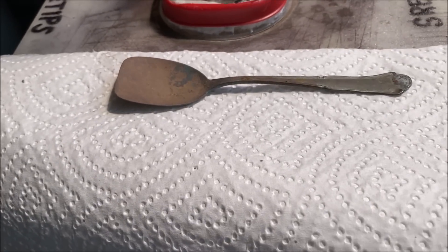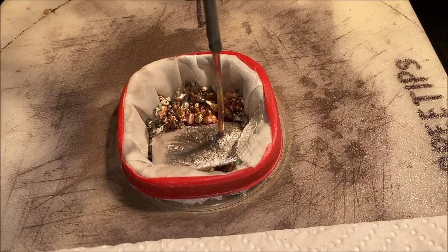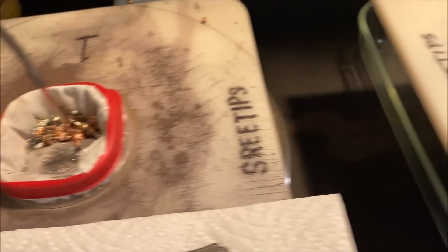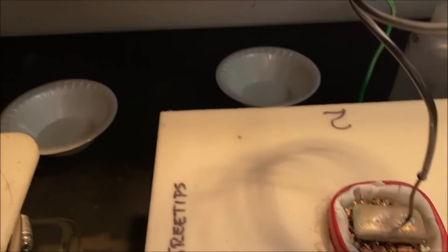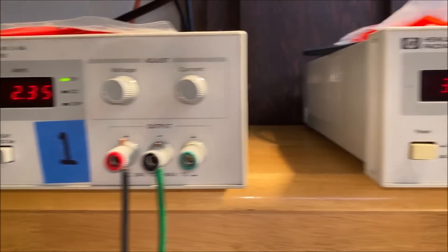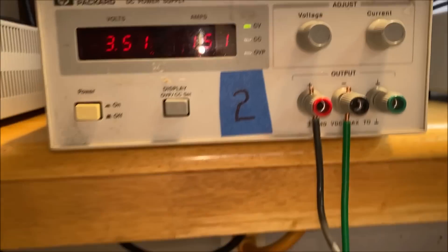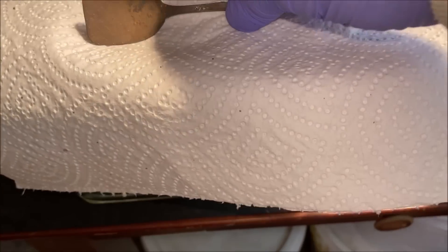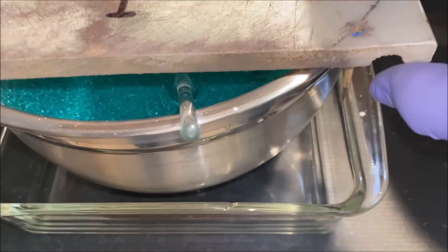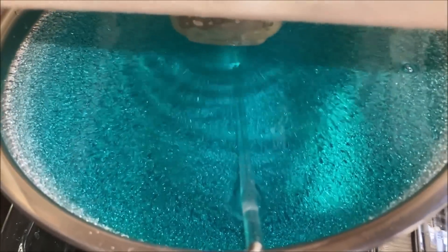Silver cell number one seems to have consumed a lot more of the impure silver than number two did, and the current flow is higher on silver cell number one than it is on number two. Let's look down in here and see exactly what we got going on down inside this cell right now.